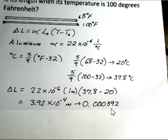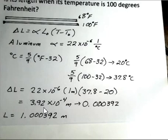Is this the length of the aluminum rod? No. This is how much it's changed. This is the delta L. To find the length, we have to add on the original length of 1 meter and the increase in length, 0.000392 meters. So this will be the new length of our aluminum rod.